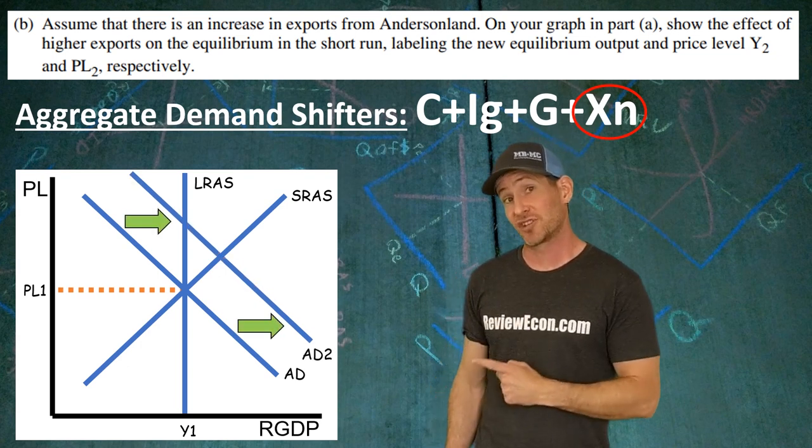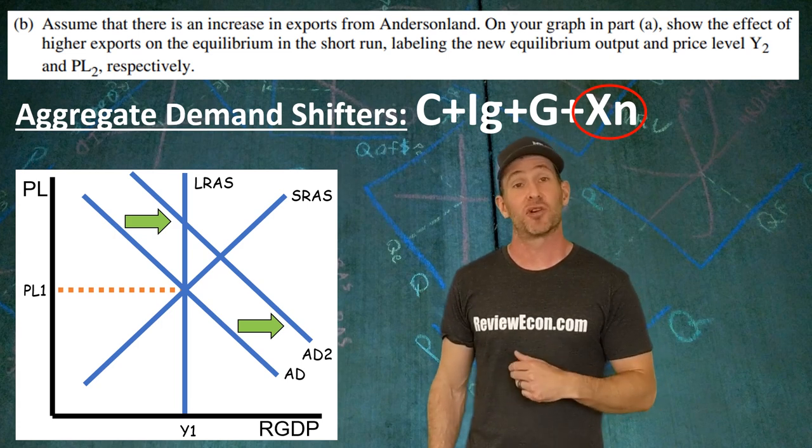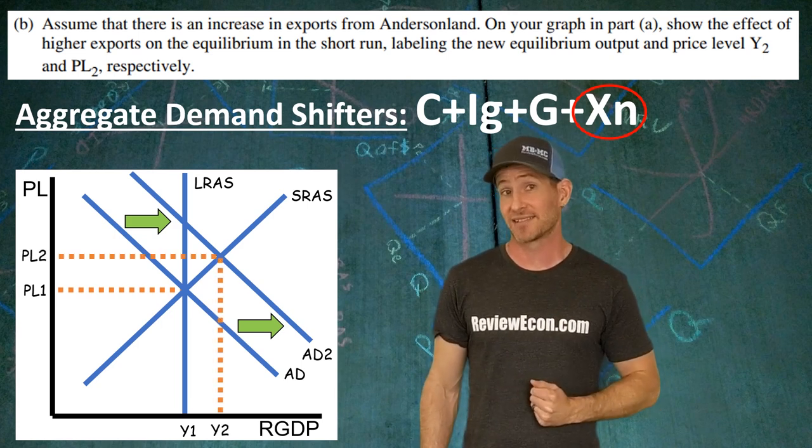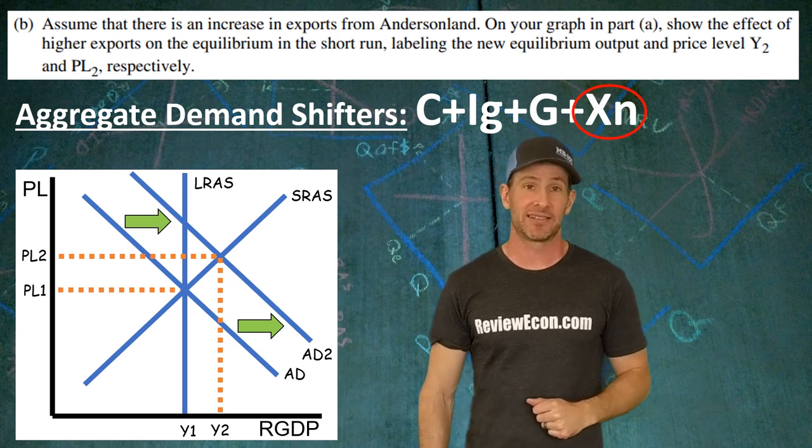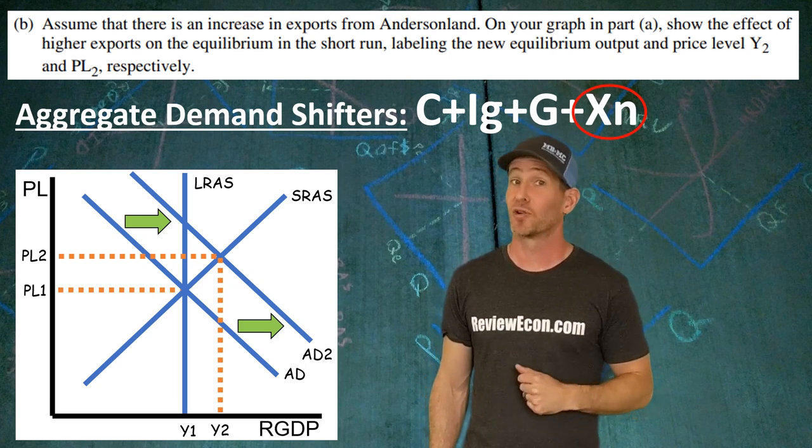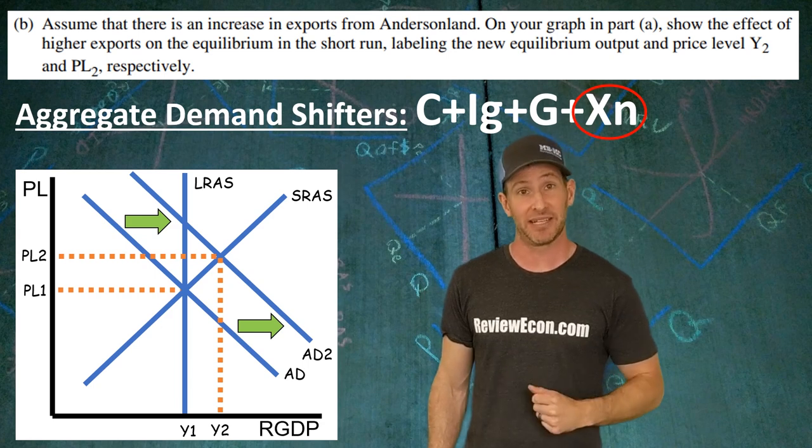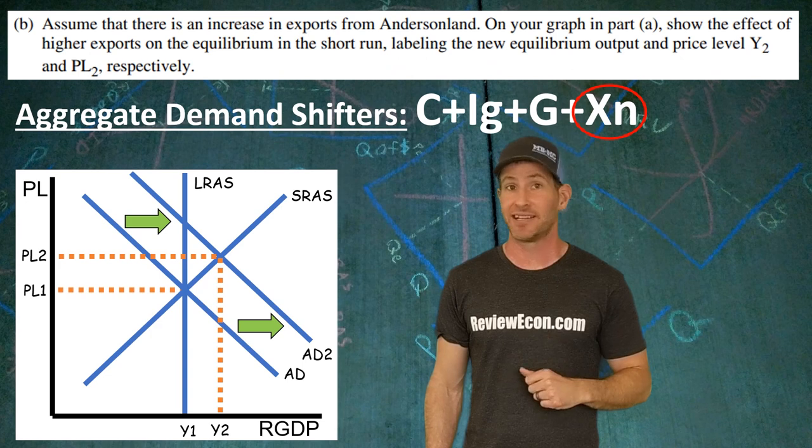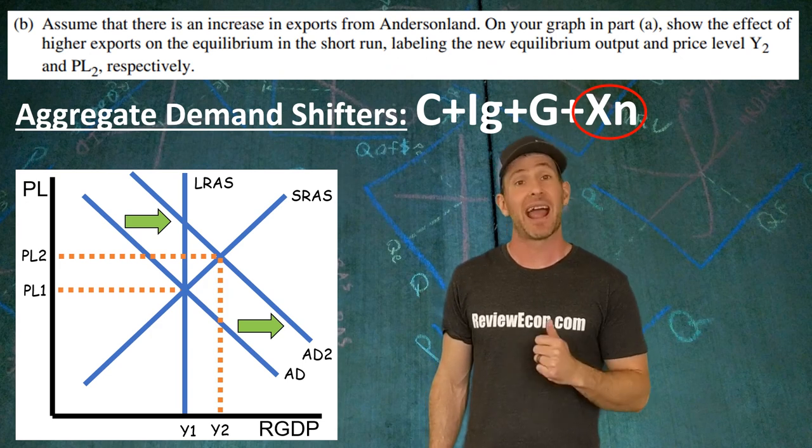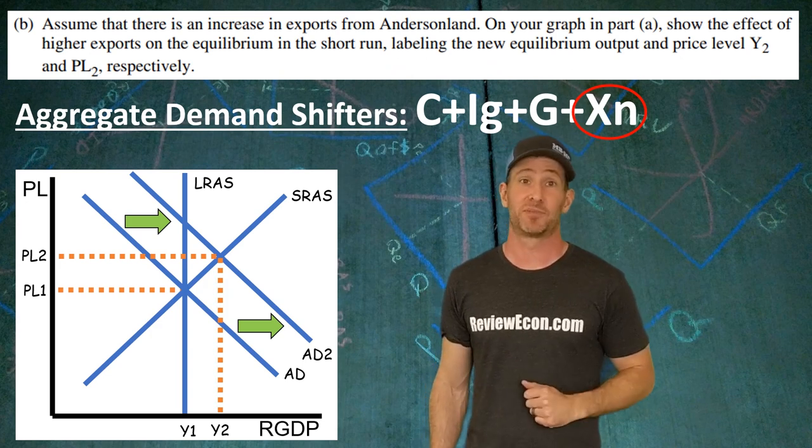Draw in that shift to the right. And then with that, you need to show an increase in the new price level at PL2 and an increase in real output, also called real income or real GDP, at Y2. Draw that shift in, indicate the price level change and the real output change, and you got your points here.